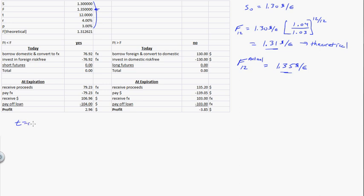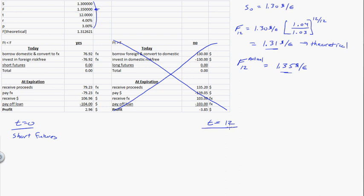If it's priced too high, you want to sell it. So at time zero, you want to short the futures contract. Shorting futures means at expiration — at 12 months — you've sold euros, just like you'd be selling corn or anything else. If you sell something, you're going to receive dollars and essentially pay euros.